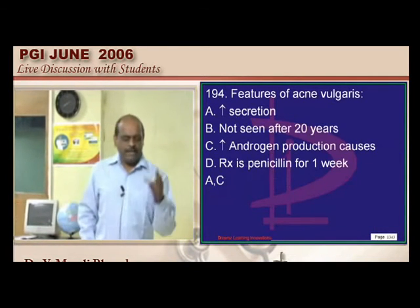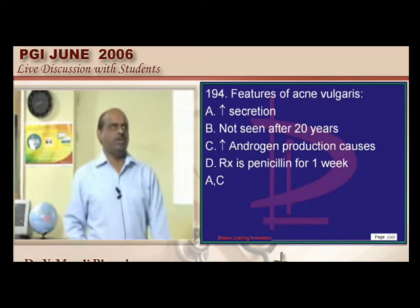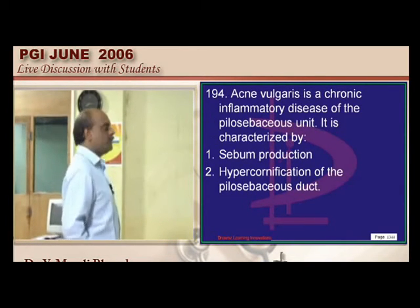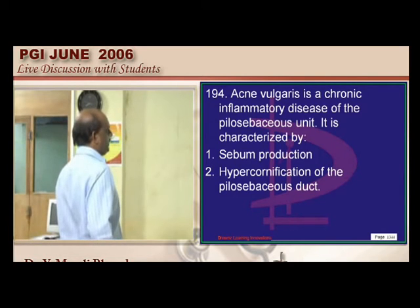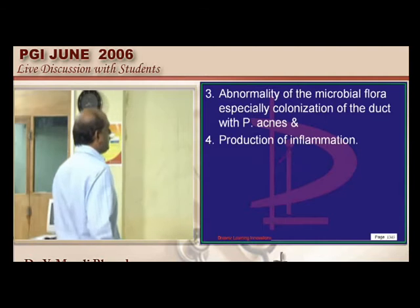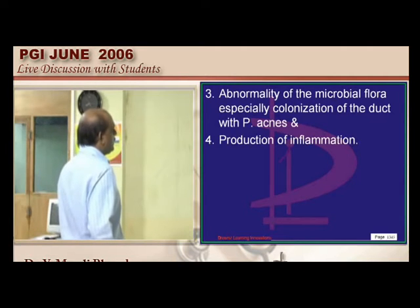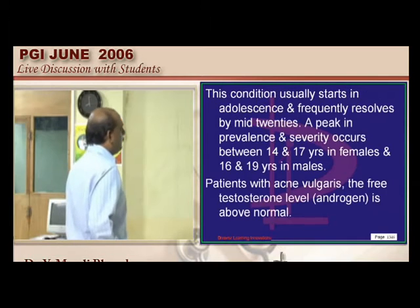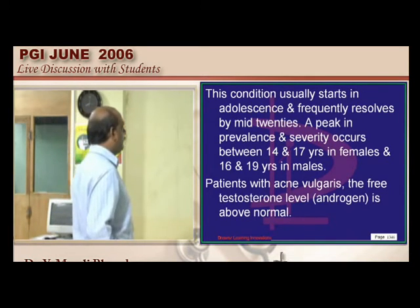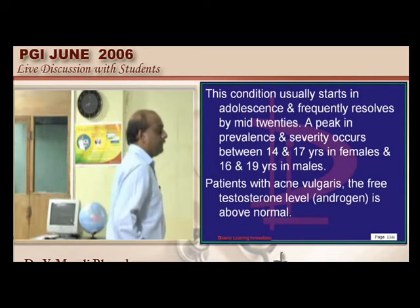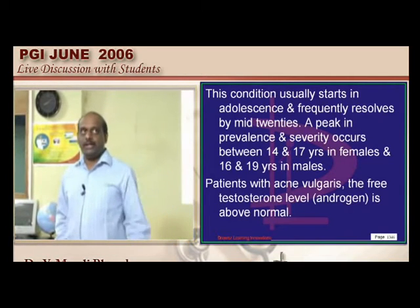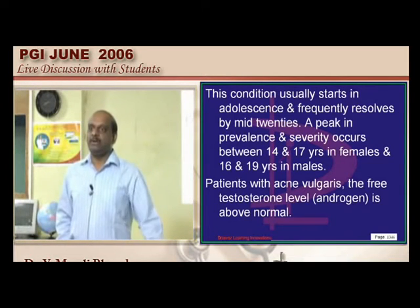Acne vulgaris: it is a chronic inflammatory state involving the pilosebaceous unit, with sebum production and hypercornification. It starts in adolescence — typically between 16 to 19 years, more common in males, and 14 to 17 years in females. It is androgens that cause excessive sebum production.